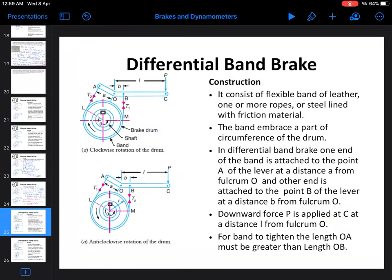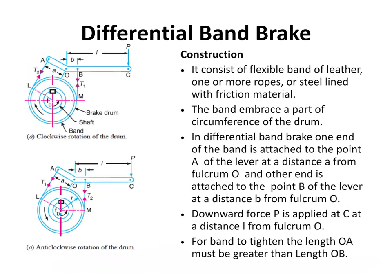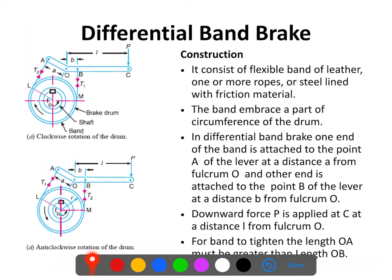We are going to see the differential band brake and the difference between the differential band brake and the simple band brake is about the position of the fulcrum O. In the previous one, one end of the band is attached to the fulcrum, but here no end of the band is attached to the fulcrum. The construction is the same — it consists of a flexible band of leather, one or more ropes, or steel lined with frictional material, and on this brake drum a band is wrapped.